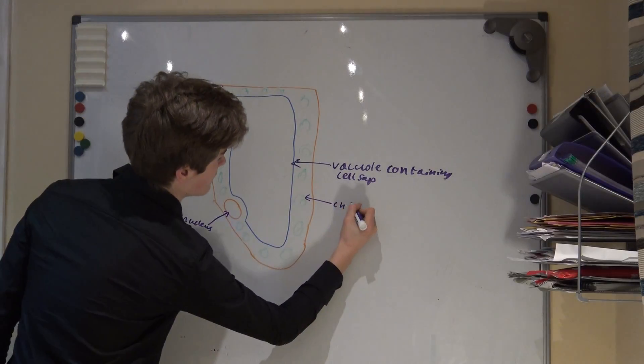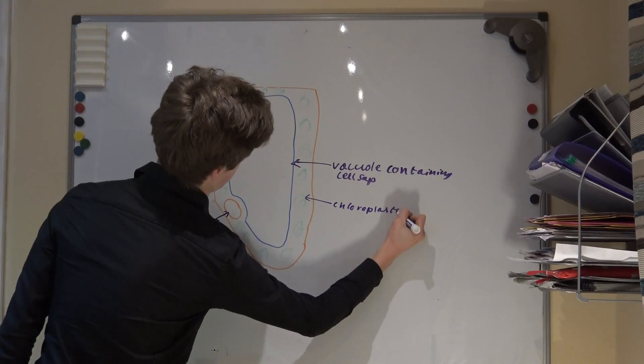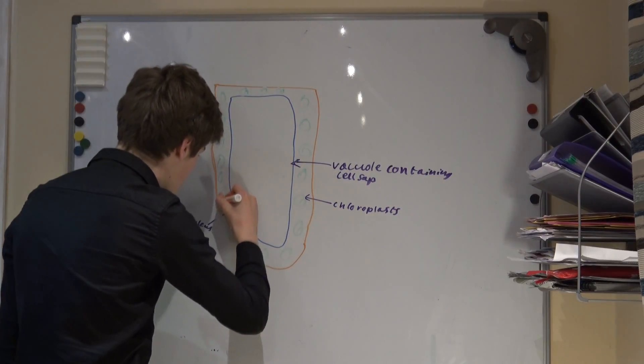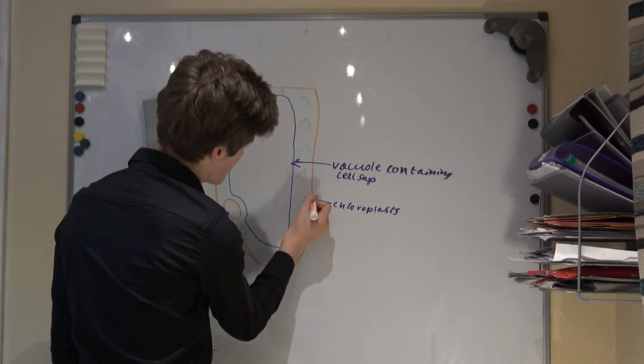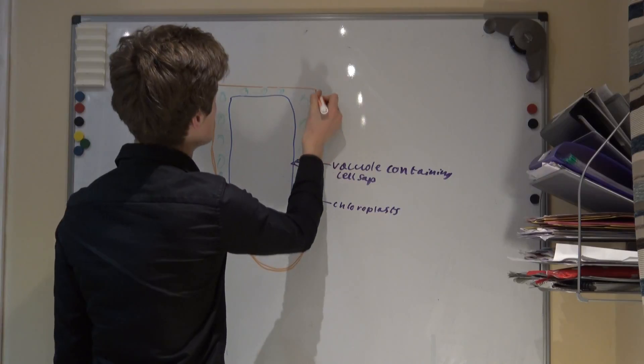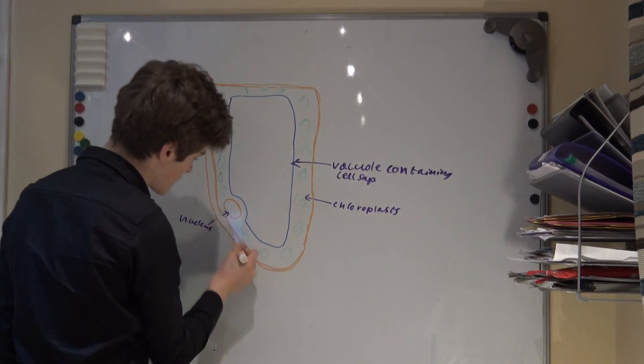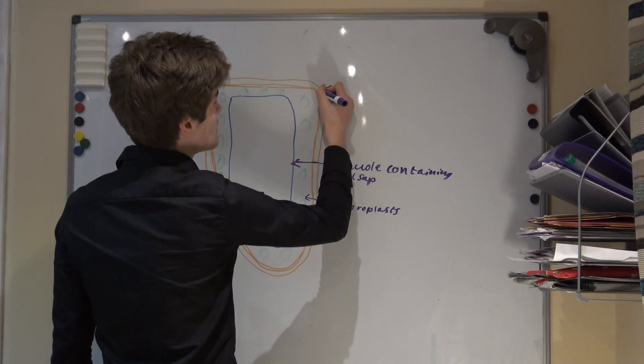Chloroplasts are also an organelle unique to plant cells. These are responsible for photosynthesis. Because of this, they are found in cells in the green parts of plants, such as the leaves and stems, but not in the roots. They have a double membrane structure, much like mitochondria. The fluid inside the chloroplast is called the stroma. They also have an internal network of membranes, which form the flattened sacs called thylakoids.